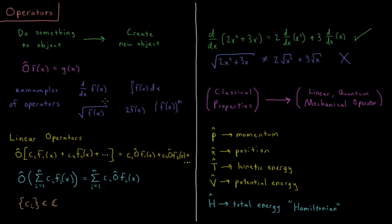Let's see if some of these examples are linear operators. Take d/dx of (2x² + 3x). Is this equal to 2 times d/dx of x² plus 3 times d/dx of x? The derivative of x² is 2x, so 2 times 2x is 4x; the derivative of x is 1, so 3 times 1 is 3. The total result is 4x + 3, which matches differentiating the original function directly. So differentiation, the first derivative operator, is a linear operator.